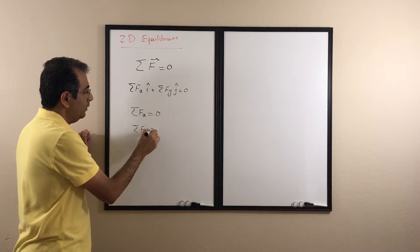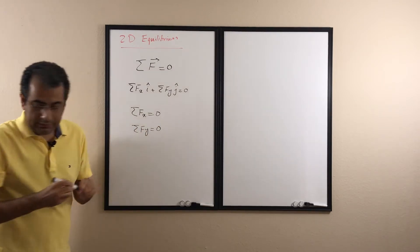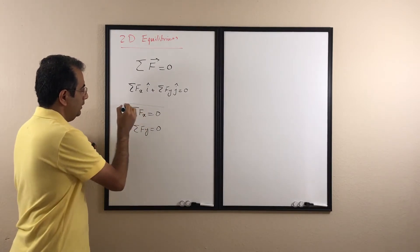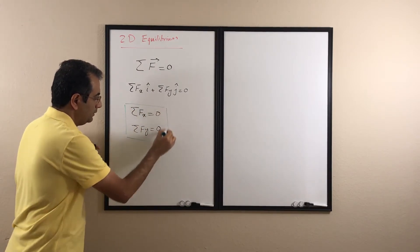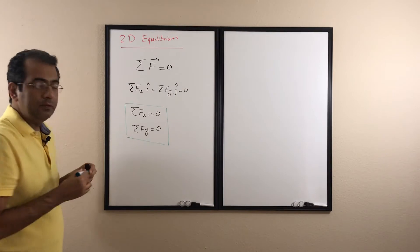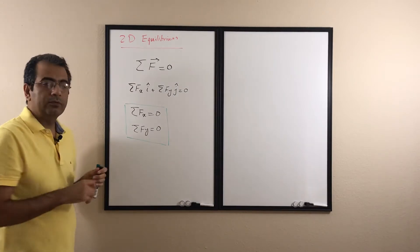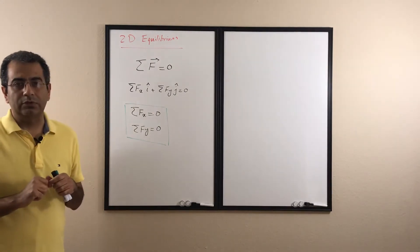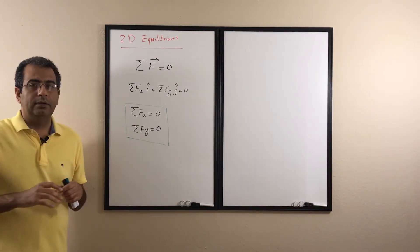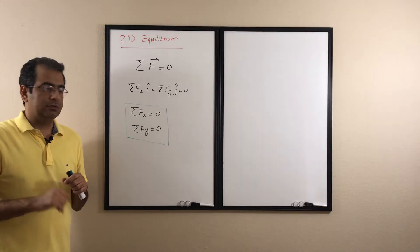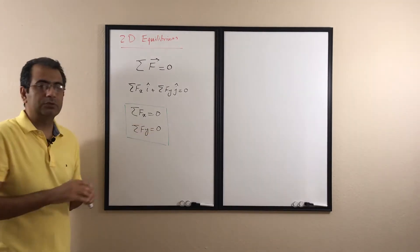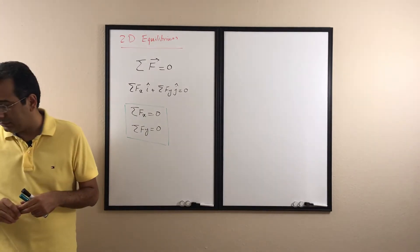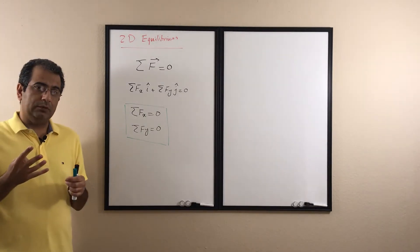To make sure this equation is satisfied, Sigma Fx should be zero and Sigma Fy should be zero. So in 2D, when we want to make sure the object stays where it is and all forces are balanced or cancel each other, these are the two equations we are going to use — all forces in the x direction cancel, and all forces in the y direction cancel.